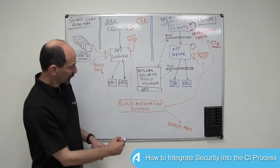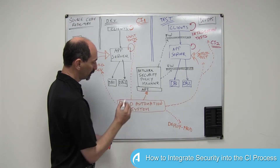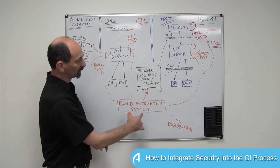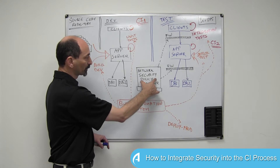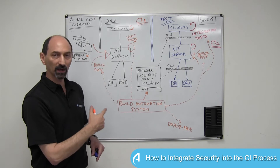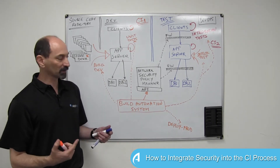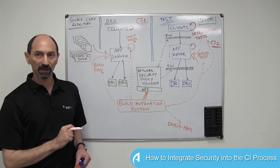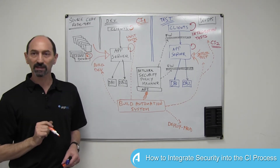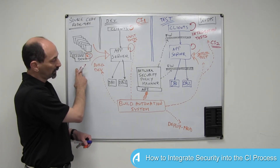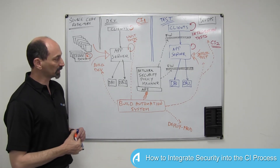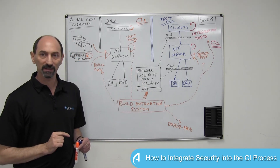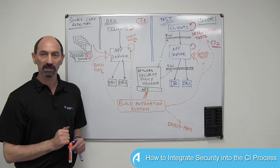So the missing piece is for the build automation system to make a call to the APIs provided by the network security policy management system. This API call would trigger the necessary change, but implemented through the network security policy management system to ensure that all governance requirements are still met. Once you deploy and activate this connectivity between the build automation system and the network security policy manager API, and also introduce this connectivity descriptor in the source code repository, you get end-to-end deployment in the DevOps methodology — completely automated, including making changes to security policies in the firewalls — without losing any governance requirements.